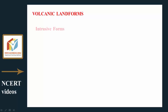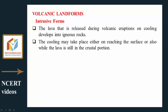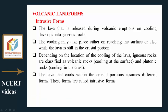Volcanic landforms — Intrusive forms: The lava released during volcanic eruptions develops into igneous rocks on cooling. Cooling may take place either on reaching the surface or while the lava is still in the crustal portion. Depending on the location of cooling, igneous rocks are classified as volcanic rocks (cooling at the surface) and plutonic rocks (cooling in the crust). The lava that cools within the crustal portions assumes different forms called intrusive forms.